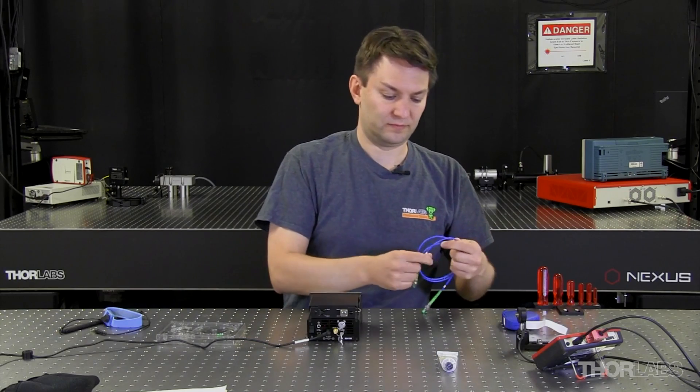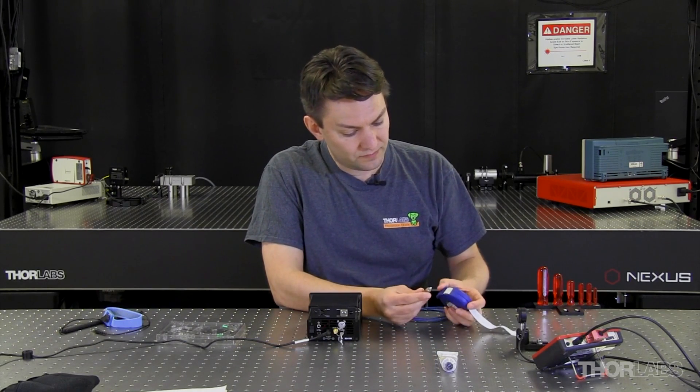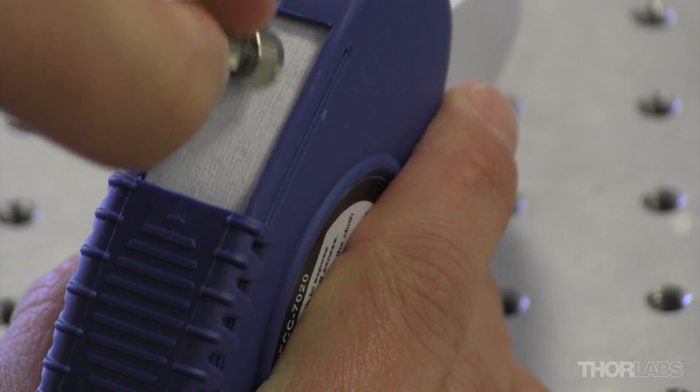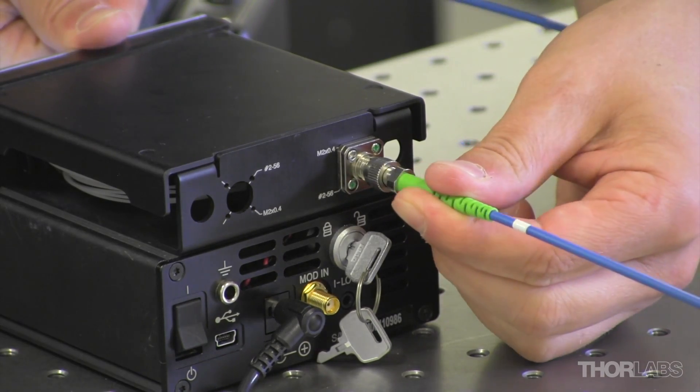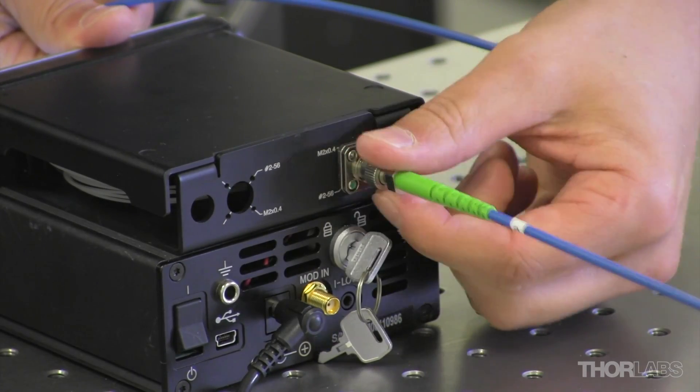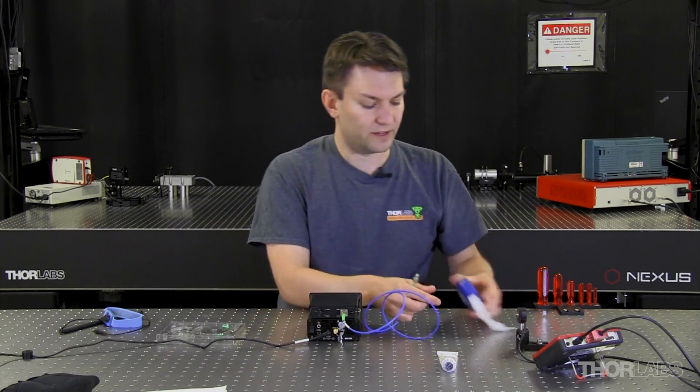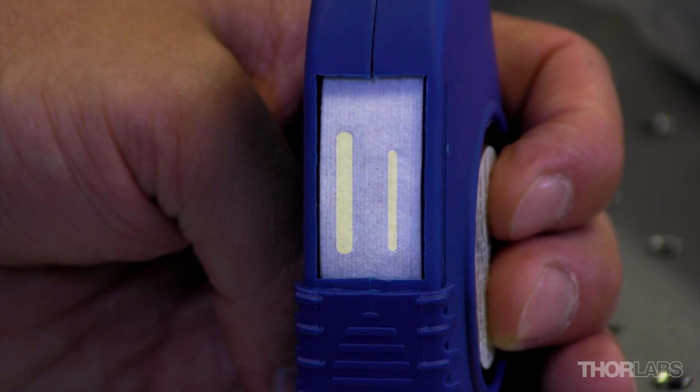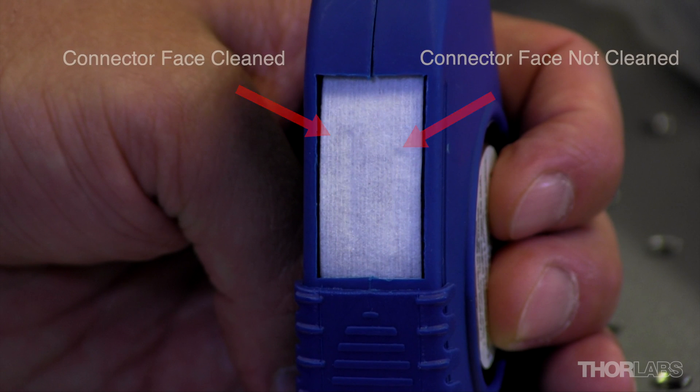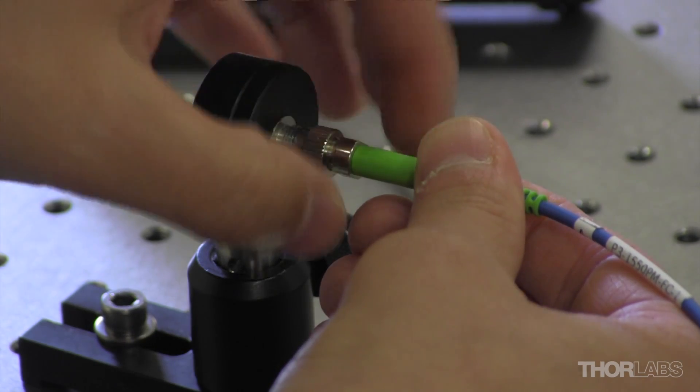So I'll take my patch cable. And I like to clean the patch cables before I ever put them into a mating sleeve. And with an APC connector, I'll ensure that the flat surface is flush against the cleaning material. One way to know that you're not flush is by looking at the mark that's left behind on the material. If you have a thin line, then you are definitely off of the face.